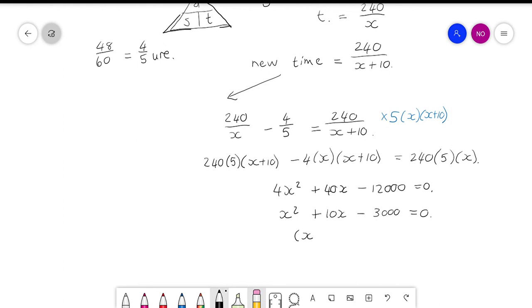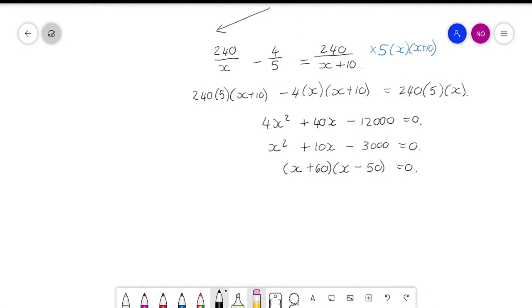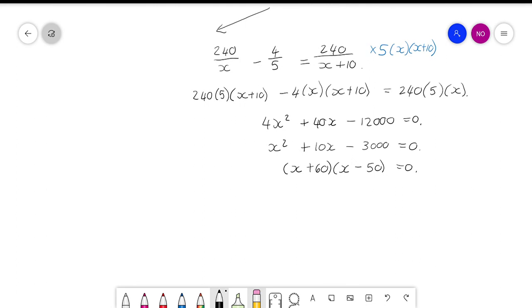We can factorize. Now x plus 60 times x minus 50 is equal to 0. So now we have two different values for x. We have x is equal to negative 60, or x is equal to 50.